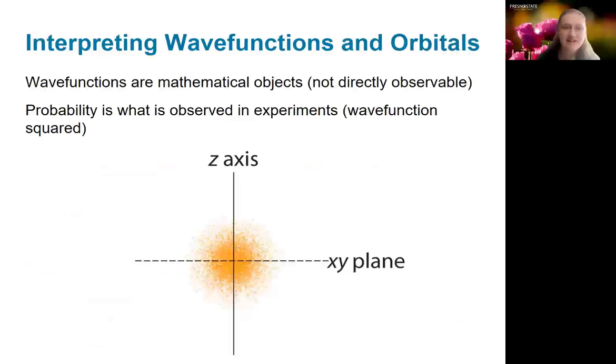As I mentioned, what we really care about is the probability. So thinking about which regions of space have the most likely case of finding the electron. The wave function itself is just the mathematical object. It's not something that you can observe directly experimentally. So the probability is really what we're thinking about here.